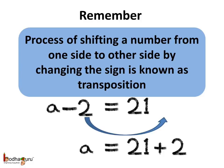And it becomes plus 2. Thus, A is equal to 21 plus 2 which is 23. This process of shifting a number from one side to the other side by changing the sign is known as transposition.